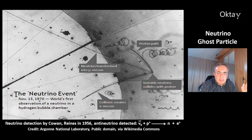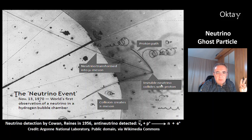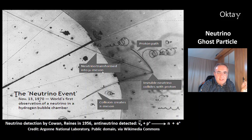In this picture, you can see another experiment from 1970 — that was an observation of a neutrino. Again, you detect the products of a collision of the neutrino with a proton. This is the path of the proton, and these are the secondary particles, the mu meson and the pi meson. That's how you detect this tiny particle, the neutrino.